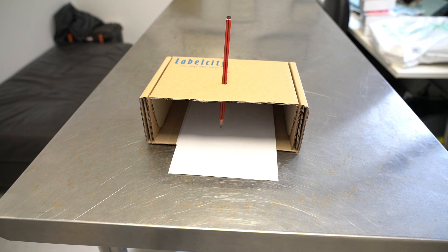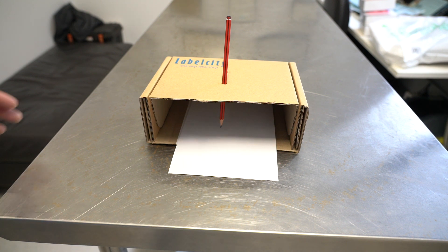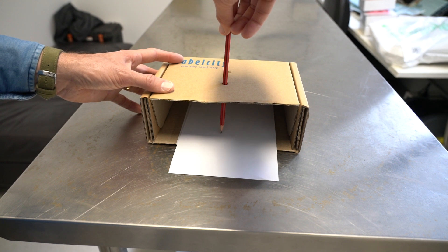So with this demonstration I've taken a pencil and put it through a hole in a box and what we'll find is that the movements that are made outside the box are reversed and upside down on the inside of the box.